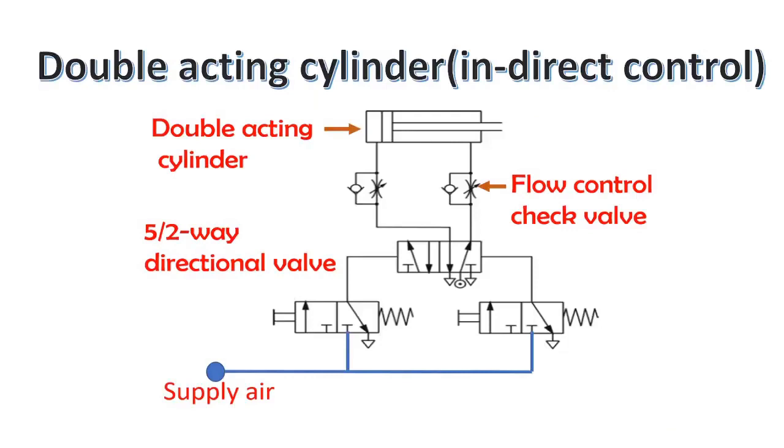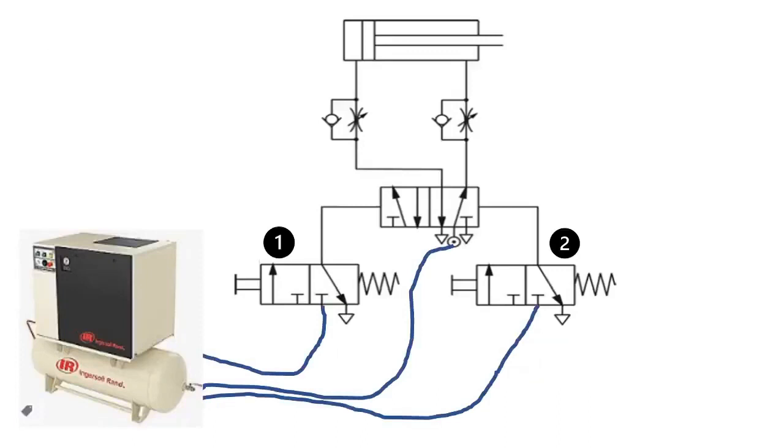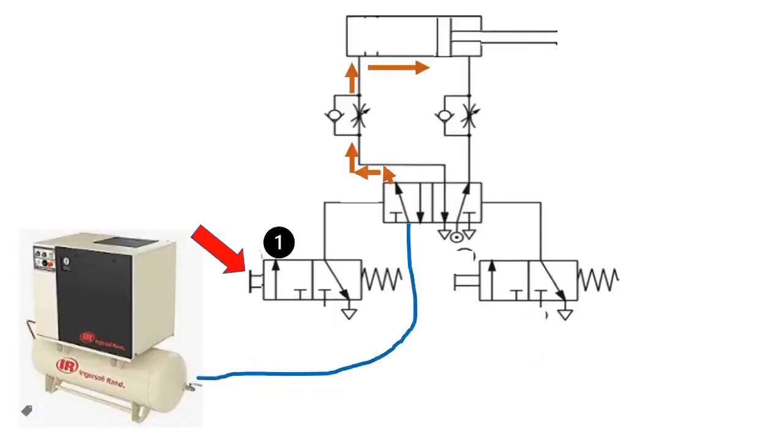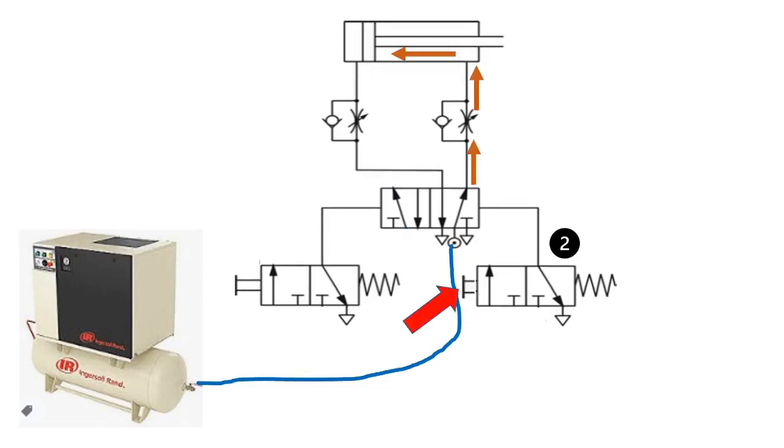This is a double acting cylinder with re-control. A double acting cylinder is to advance when number 1 push button is pressed and it will remain extended until the number 2 push button is pressed. When the number 2 push button is pressed, the cylinder is to retract.